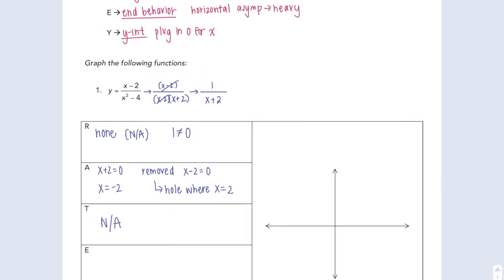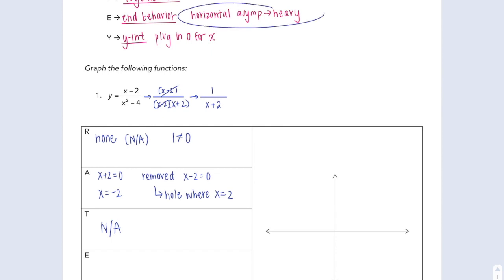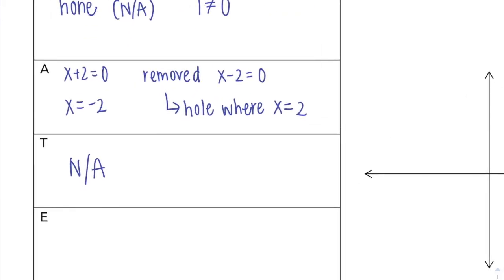E, end behavior. Remember, the horizontal asymptote is the heavy. This is bottom heavy. So Bobo, bigger on the bottom. So y equals 0.